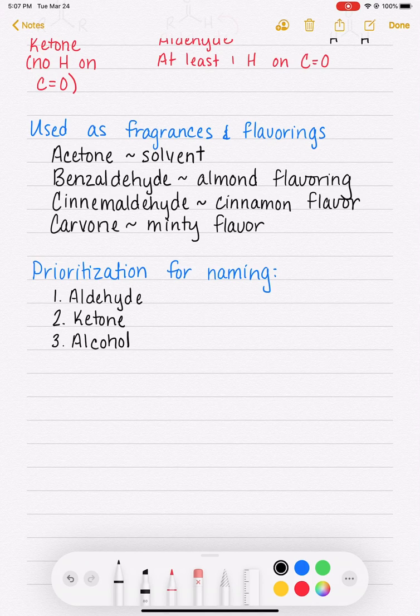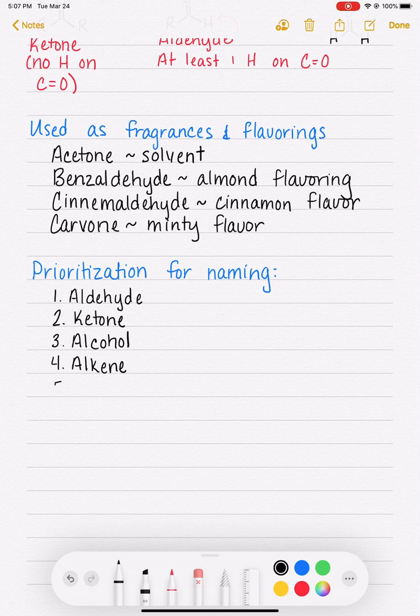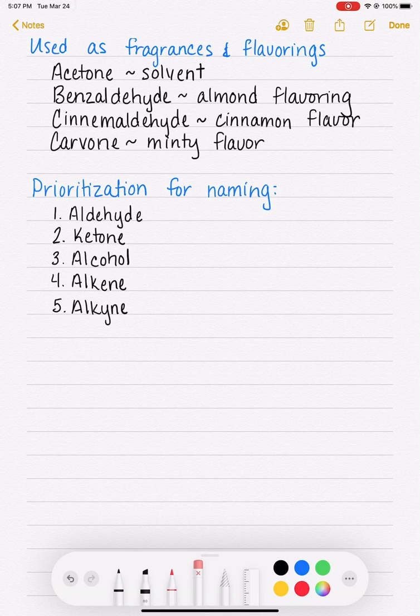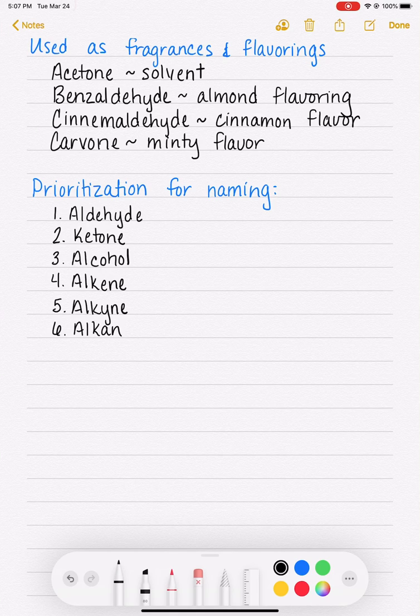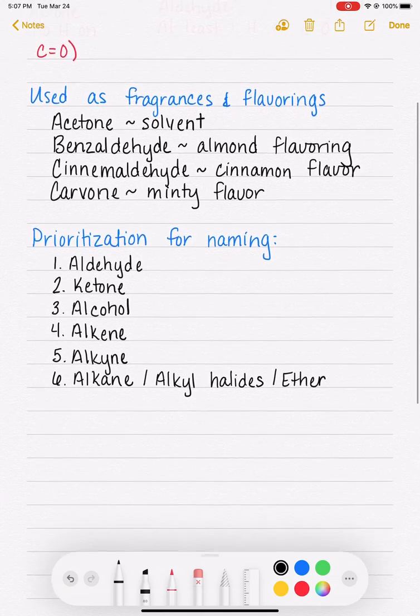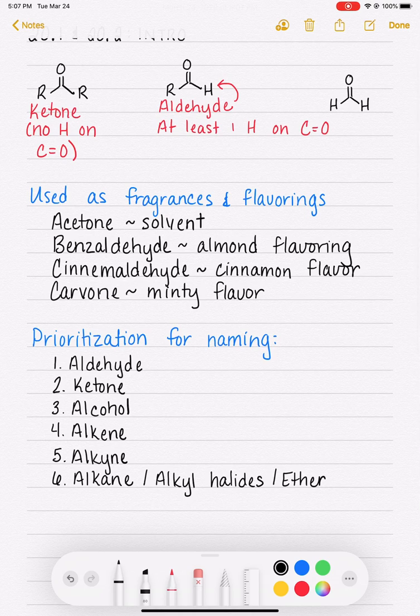And then we have the alkenes. And under that, the alkynes. And then at the bottom of the list, we have our alkanes, which is going to include alkyl halides. And also it's going to include ethers, because if you recall from last quarter, ethers aren't their own functional group. So they are just named as substituents hanging off of some other type of molecule.